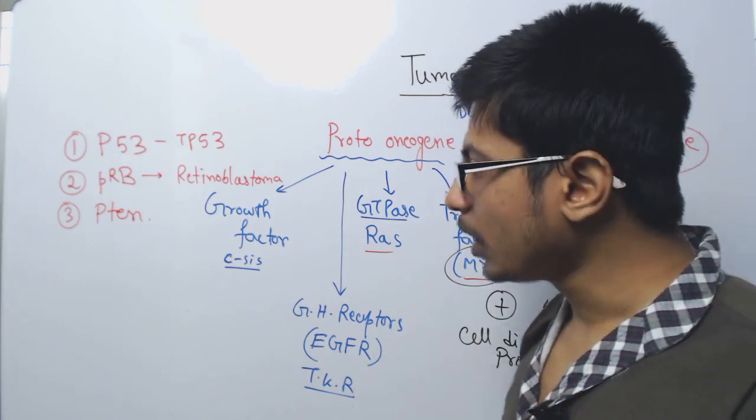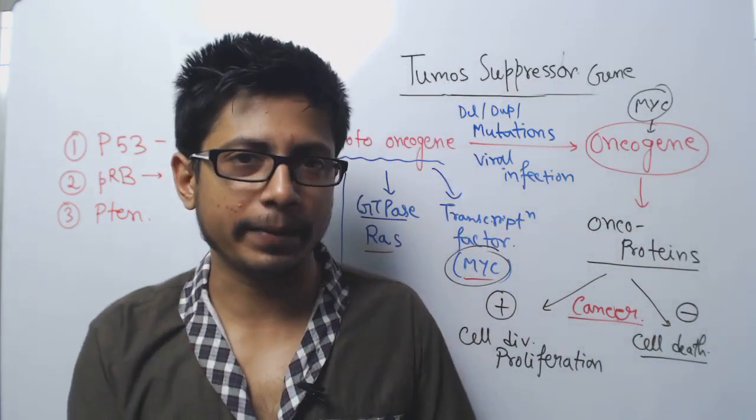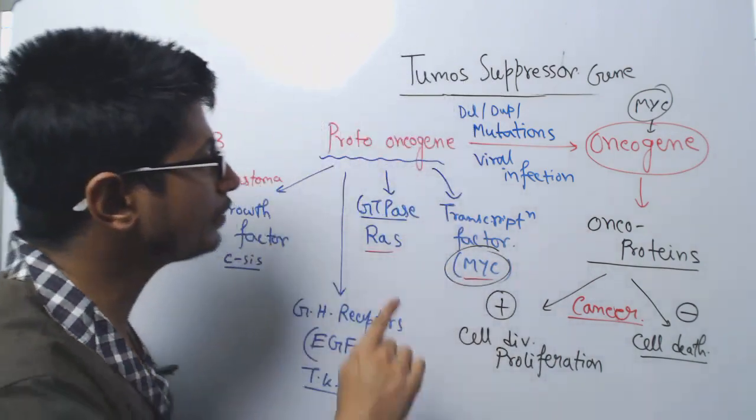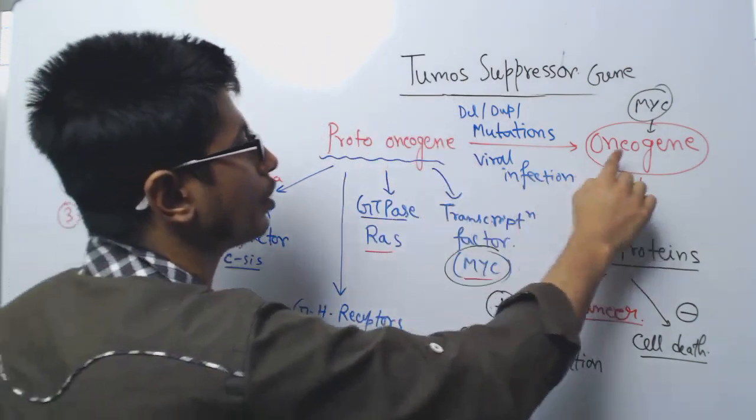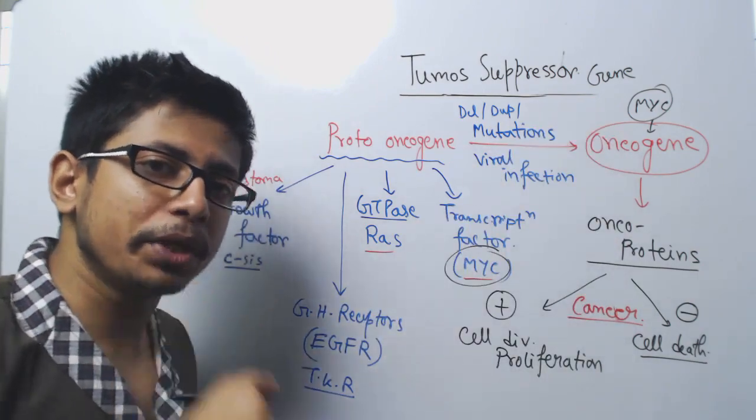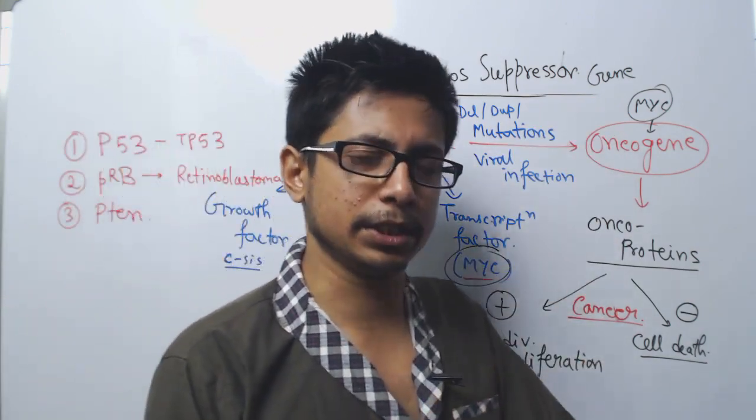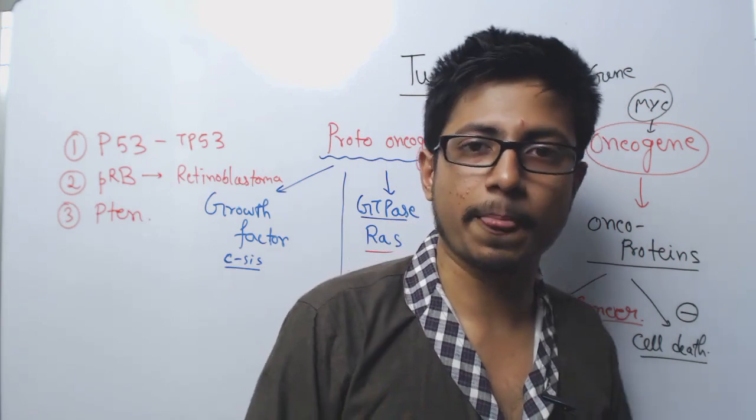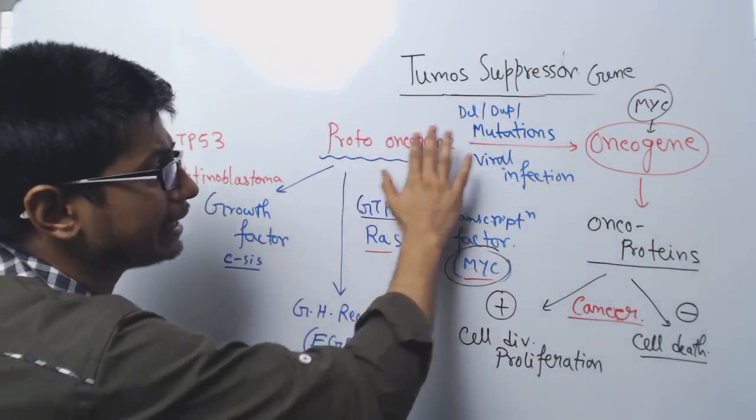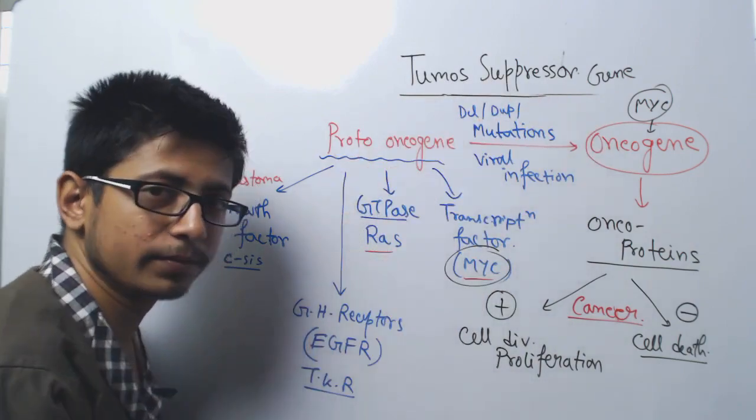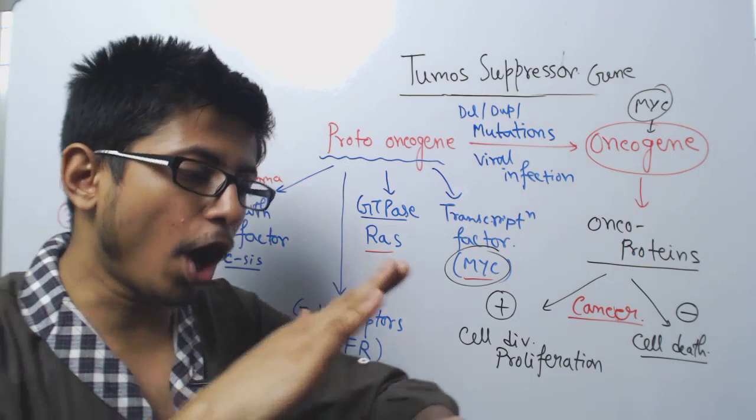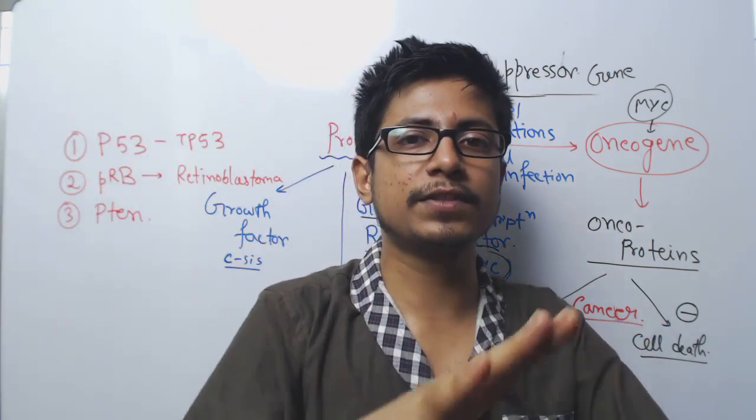In those conditions, when there is any problem, any sort of mutations—because the reason for converting proto-oncogenes into oncogenes are mutations—if there is any mutation or DNA damage, like deletion of genes or any sort of DNA damage, these tumor suppressor genes will halt the process of cell division.